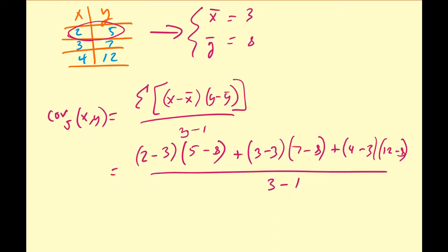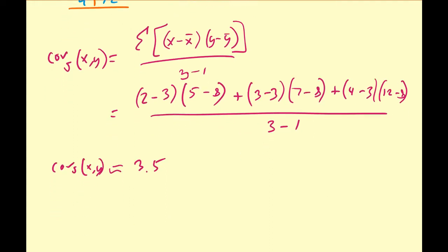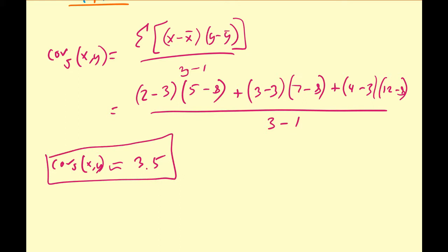Alright, so from here, what do we get? So once you calculate all this out, you should get something approximately equal to 3.5. So this is the covariance of X and Y. So what does this number mean? What does it mean to have a covariance of 3.5?